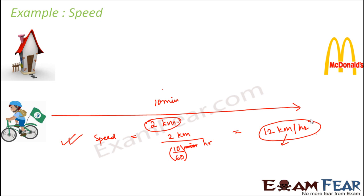Speed tells us the distance that a particular object can cover in unit time — whether it is in one hour, one second, or one minute.